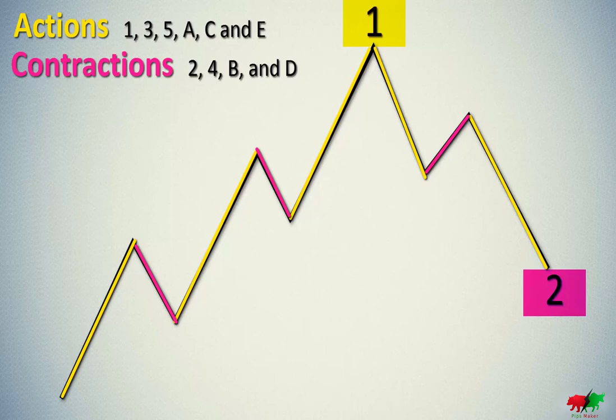Surely you're wondering why we need such a differentiation. Actually, the impulse wave has the same feature as the action wave. We would not need such a differentiation if all action waves were impulse waves. As you remember, I already mentioned that most of them can be divided into the 5-wave structure.